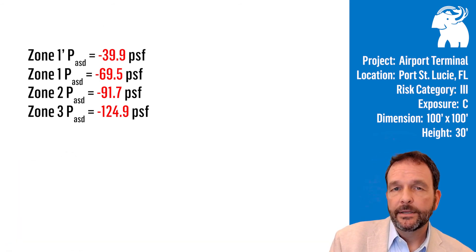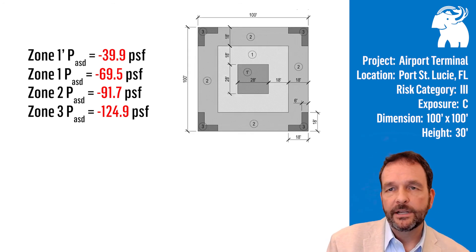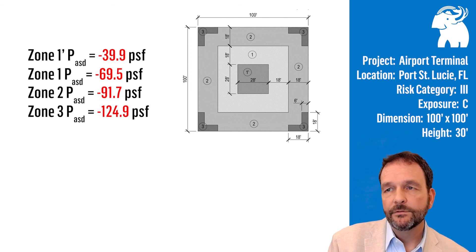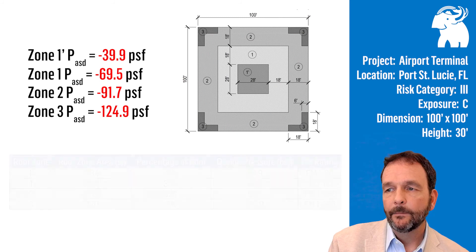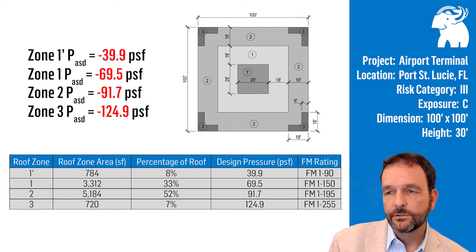We use the allowable stress design pressure to find low slope roofing that's been tested in a third party lab or approved by a jurisdictional agency that will withstand these pressures. Let's break it down a little further. Let's look at the figure for our example, a 100 foot by 100 foot roof. You can see we have each pressure for each roof zone, and we have a table that shows the pressures for zones 1 prime, 1, 2, and 3.